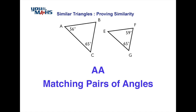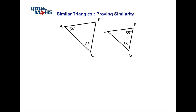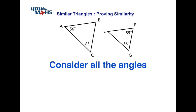One of the similarity conditions is called angle-angle, and what we need to do here is investigate matching pairs of angles between the two triangles. Having a quick scan through, we've got two angles in both triangles, but they don't necessarily match, so we need to consider all the angles before we get started.